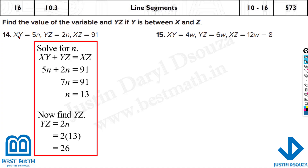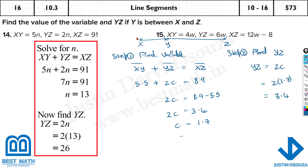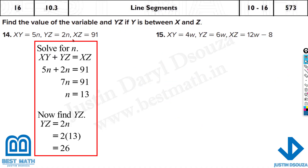For the next problem, we add XY and YZ because Y is in between X and Z. Substituting: 5n plus 2n equals 91. Adding: 7n equals 91, so n equals 13. Substituting back gives YZ equals 26.